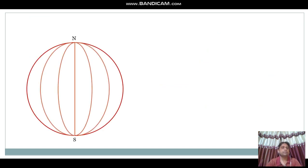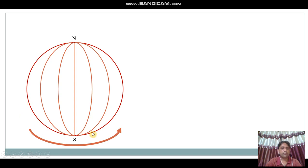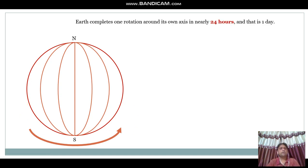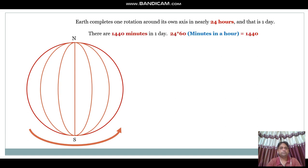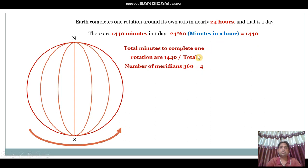Longitudes or meridians run from north to south, intersecting at the polar regions, with maximum distance between them at the equatorial region. The Earth moves from west to east and completes one rotation around its own axis in nearly 24 hours, which is one day. There are 1440 minutes in one day, calculated using the formula 24 multiplied by 60.